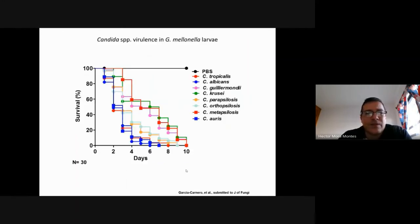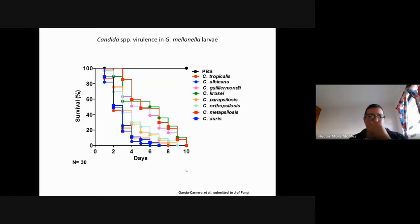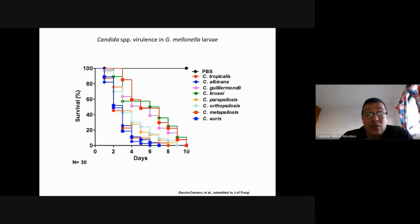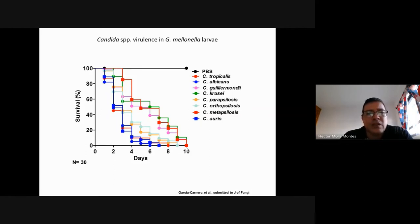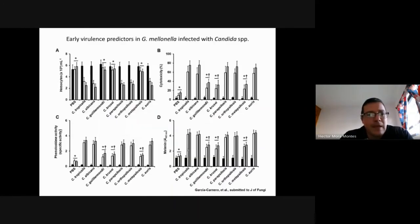We have mortality curves using different Candida species spanning 10 days. The virulence observed in Galleria fits with knowledge from mouse models. Focusing on the first day, where mortality is not yet dramatic — around 50% — we were looking for early predictors of virulence.